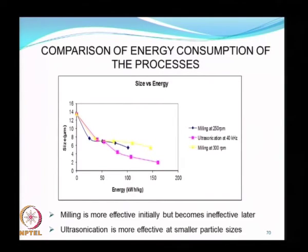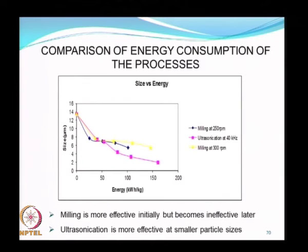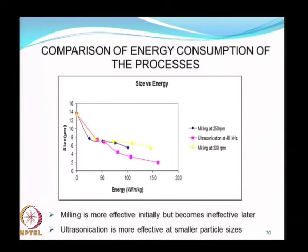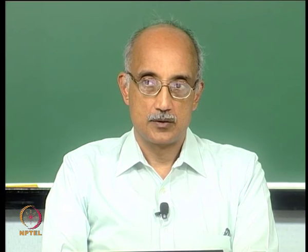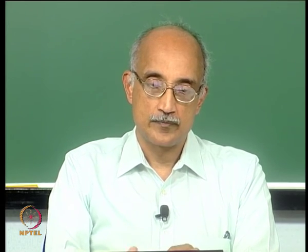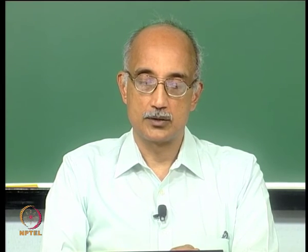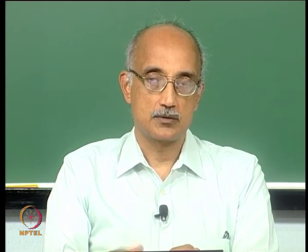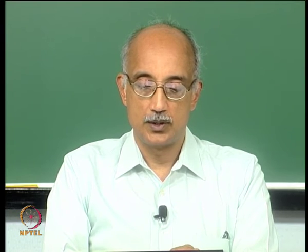Milling is a more energy-efficient process until a size of roughly 5 microns is reached, after which sonication becomes the more energy-efficient process. If you are trying to do nanoparticle synthesis by size reduction, you are probably better off using a combination of techniques: use a ball mill to reach from an initial size of around 70 to 100 microns down to about 5 microns, and after that start sonicating the particles to do further size reduction.